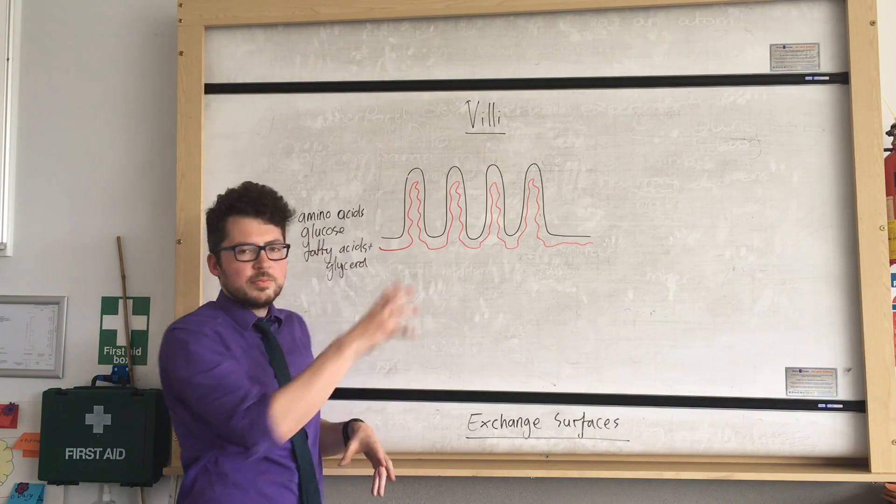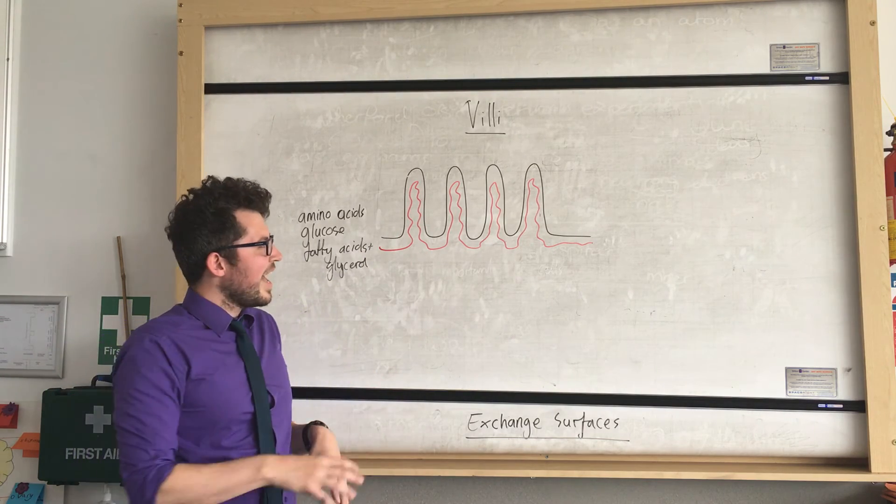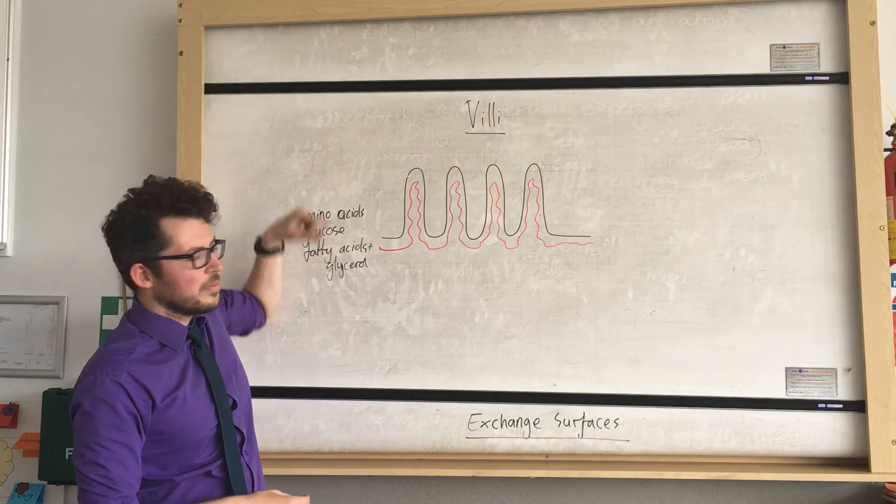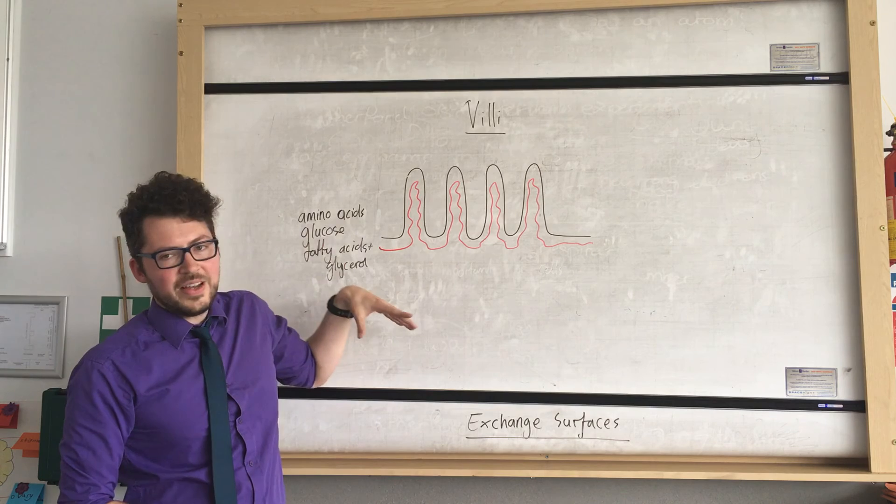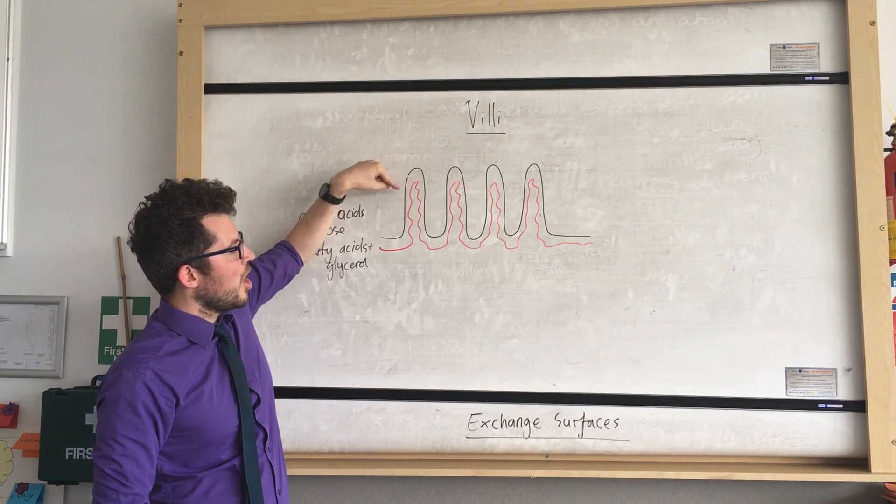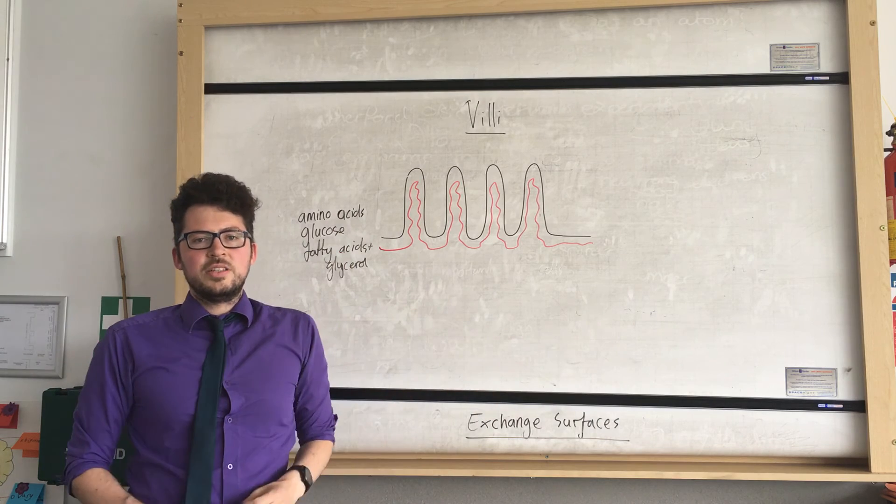You can see these red tubes here represent blood vessels. What we have is the materials in our gut - for example amino acids, glucose, and fatty acids - would move from the gut into our bloodstream and then be carried away to the body.